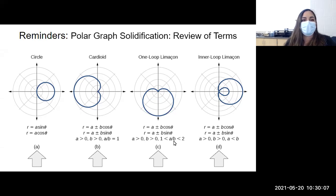And then the last one, we spent a lot of time on this, the inner loop limaçons. So that was R is A plus or minus B cosine theta, R plus or minus B sine theta, just like the cardioid and the one loop. But A had to be smaller than B in order for that loop to exist.